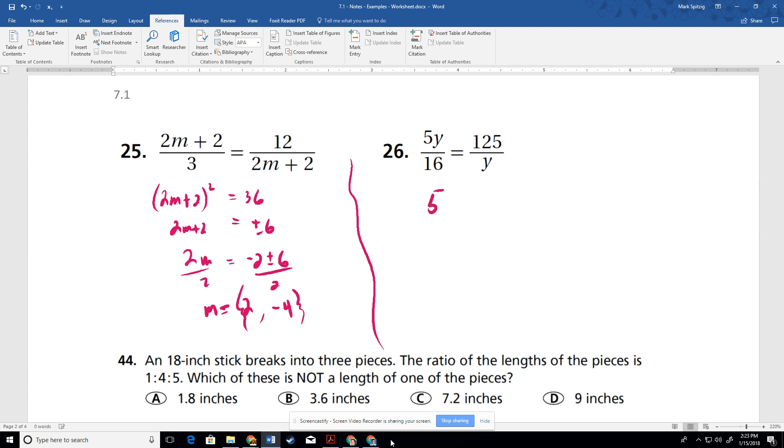5y times y is 5y squared. 16 times 125 is 2,000. Divide that by 5 is 400. So y squared equals 400. Square root of that is going to be 20. So in this case, plus or minus 20.